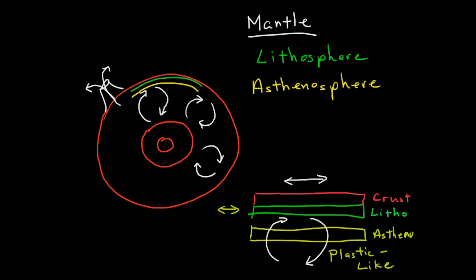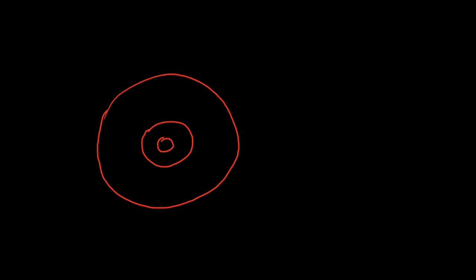And then we finally have our crust. All right, and our crust, one of the important things to know about our crust is it's kind of like the shell of an egg. It's really thin, and just like the shell of an egg it has cracks in it and it has different sections. It's broken up into sections called plates.